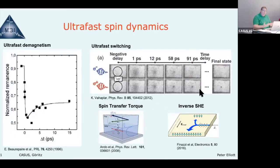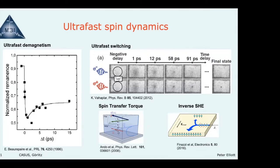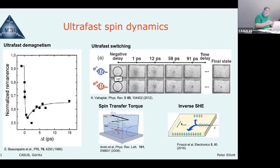The reason we're interested in ultrafast spin dynamics is this general technology motivation: you want your computers and technology to be faster, smaller, and more energy efficient. Ultrafast for us means picosecond down to femtosecond. Our TDDFT simulations work on maybe tens of femtoseconds, maybe a hundred maximum — that's a thousand to a million times faster than conventional electronics you can buy today.